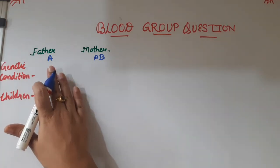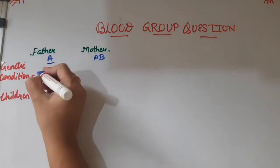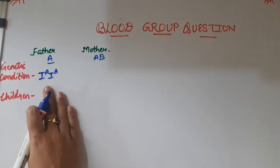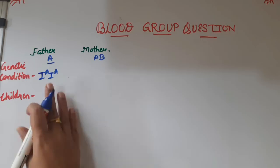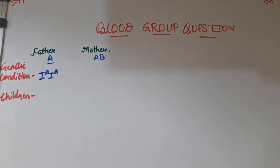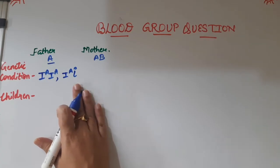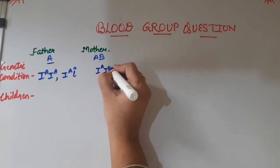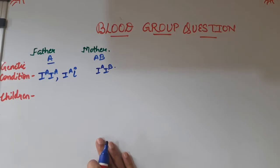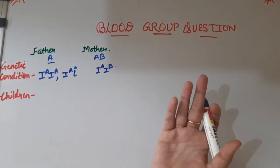First we need to figure out the genetic condition of a person. If a person has blood group A, there are two types of allelic conditions: the first is the homozygous dominant condition (IᴬIᴬ), and the second is the heterozygous condition, which is a combination of Iᴬ and small i (Iᴬi). For a person who belongs to blood group AB, there is only one possibility: Iᴬ and Iᴮ, where both alleles co-dominate each other — this is the concept of co-dominance.